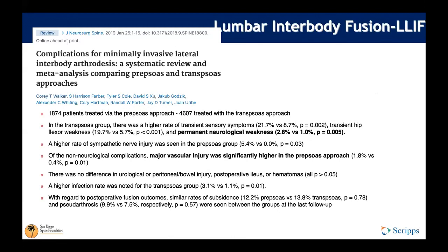In the trans-psoas approach, transient neurologic symptoms occurred in 21% (sensory) versus 8% in the anti-psoas approach. Transient hip flexor weakness was 20% trans-psoas versus 5.7% anti-psoas. Permanent neurologic weakness was 2.8% versus 1% respectively. Major vascular injury was significantly higher in the pre-psoas technique at 1.8%. There was no difference in urologic, peritoneal, bowel injuries, or ileus between approaches, and fusion, subsidence, and pseudoarthrosis rates were similar.